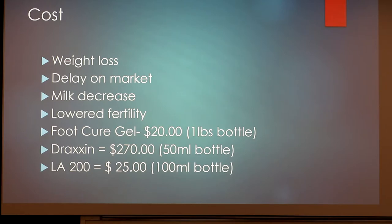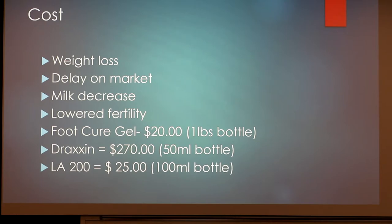The three treatment options and their costs: foot cure gel is the cheapest option if you catch it early — about $20 for a one-pound bottle. Draxin is very expensive — a common drug for beef or dairy cattle — at $270 for a 50-milliliter bottle, and it's usually for larger animals. LA-200 is $25 per 100-milliliter bottle and is typically only given to stocker calves or younger animals.